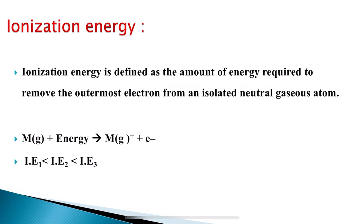For example, a metal which is in a gaseous form — when it combines with an energy it is going to leave an electron. This is a common phenomenon: when radiation or heat energy falls upon any metal or substance, it is going to lose an electron. How much energy is required to remove the outermost electron from that particular isolated neutral gaseous atom — that energy is called ionization energy. The energy required to remove the outermost electron from a neutral gaseous atom is known as first ionization energy and it is represented as IE₁.